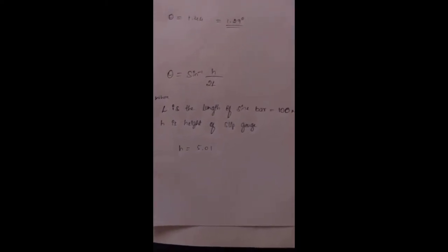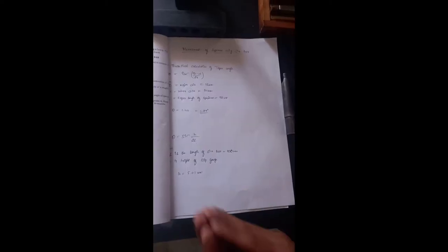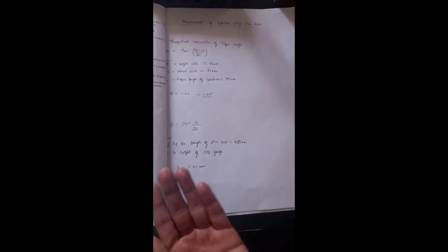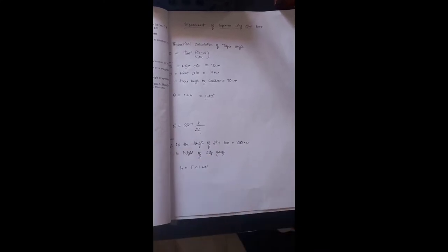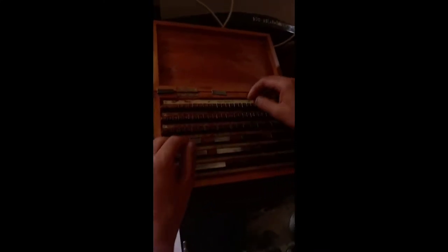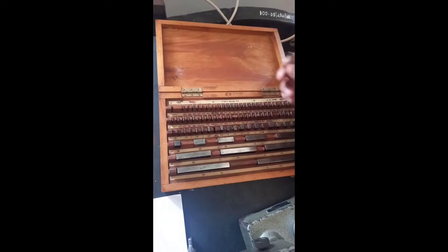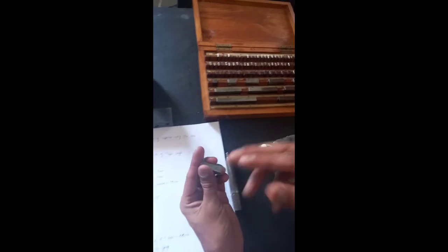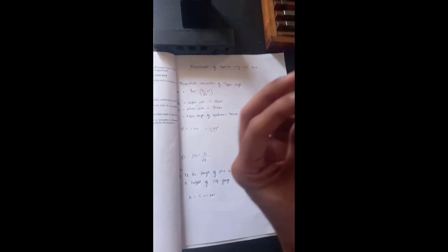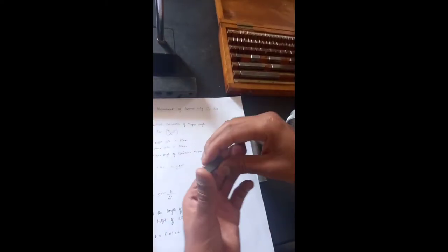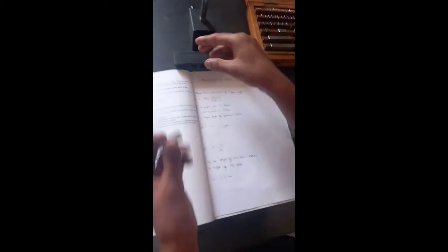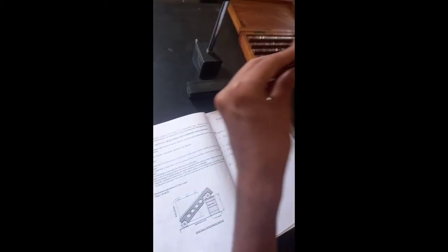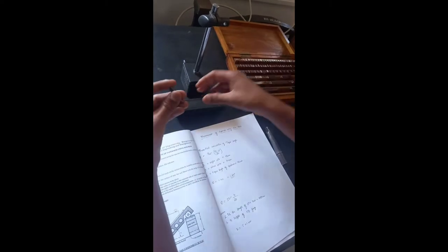Substitute theta from the theoretical taper angle and we will get the height as around 5.01. So we have found out the h value as 5.01 mm. From the slip gauges box we have to take two slip gauges which can combinedly make approximate value to 5.01, so we have taken here as 5.4 mm.